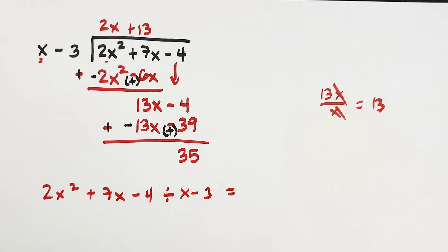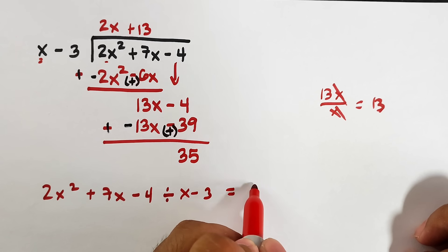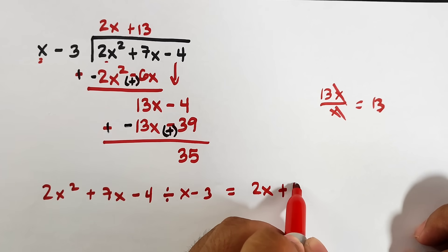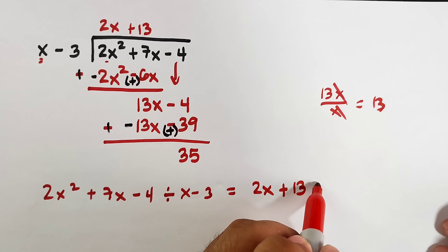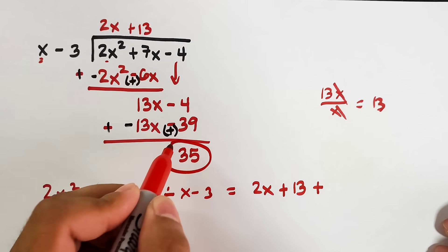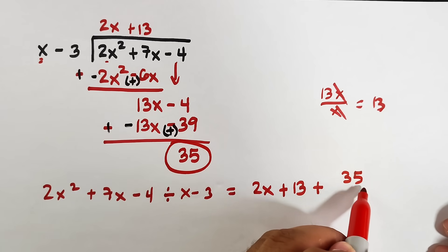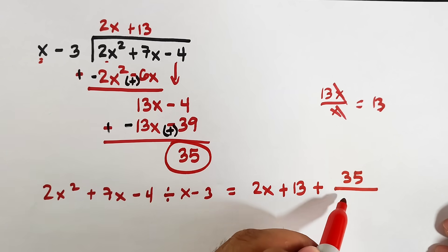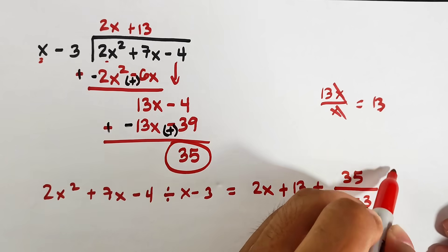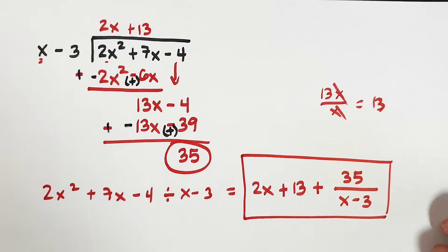Here's how to write the quotient: first copy the quotient, which is 2x plus 13, then add plus remainder over divisor — so plus 35 over (x minus 3). That is the final answer for example number two. I hope you learned something from this video. If you're new to my channel, don't forget to like and subscribe to be updated on our latest uploads. It's me Teacher — thank you very much, bye!